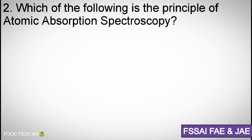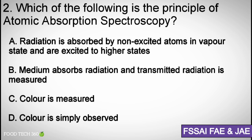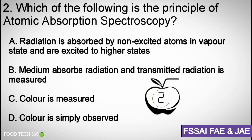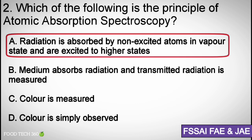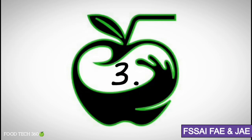Question number two: Which of the following is the principle of atomic absorption spectroscopy? Options: (a) Radiation is absorbed by non-excited atoms in vapor state and are excited to higher states. (b) Medium absorbs radiation and transmitted radiation is measured. (c) Color is measured. (d) Color is simply observed. Correct answer: (a) Radiation is absorbed by non-excited atoms in vapor state and are excited to higher states.